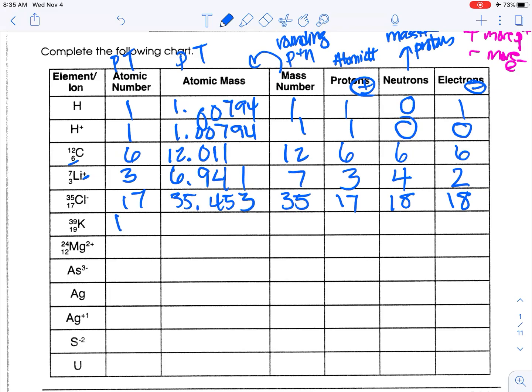Potassium has 19 protons — it tells you here on the bottom, but you could also look it up. Atomic mass is 39.0983, which means you can round that to 39. Protons again is 19, so 39 minus 19 is 20 neutrons. There's no charge written, so electrons is the same as protons: 19.